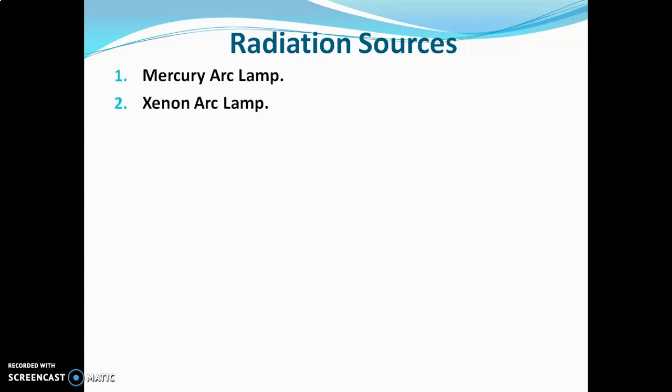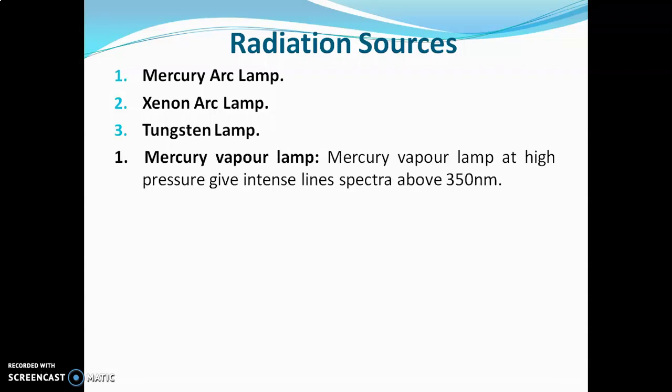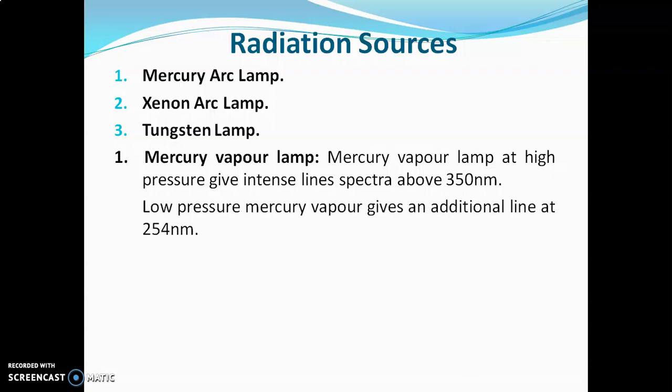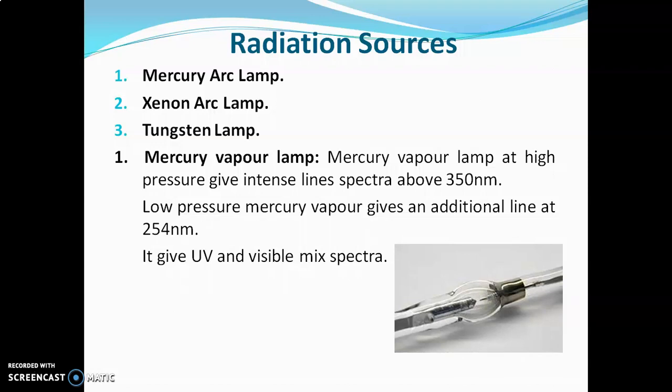Many radiation sources are available. First is the mercury arc, second is the xenon arc, and third is the tungsten lamp. The mercury vapor lamp at high pressure gives intense line spectra above 350 nanometers, that is in the visible range. At low pressure, it gives additional lines at 254 nanometers. It gives a mixture of UV and visible radiations.